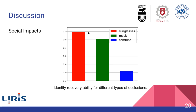Face de-occlusion may risk violating human privacy. To quantify this risk, we conduct experiments to analyze the identity recovery ability across different types of occlusions. When combining a mask with sunglasses, the method can no longer recover the face identity. This observation proves that the method is controllable with respect to privacy violation.